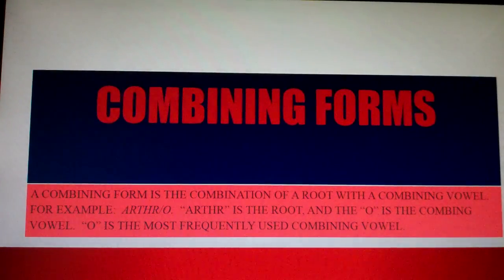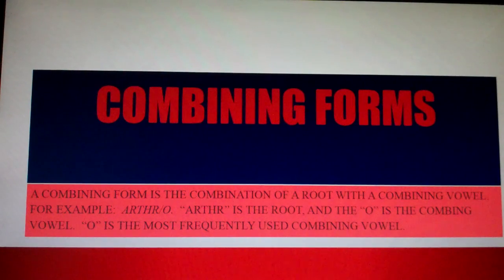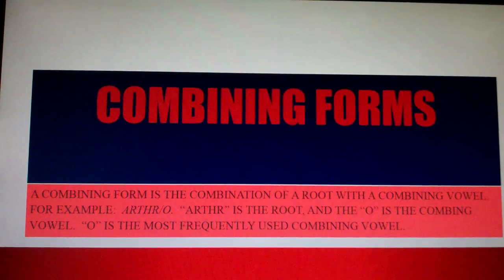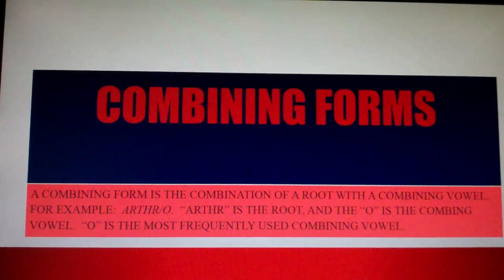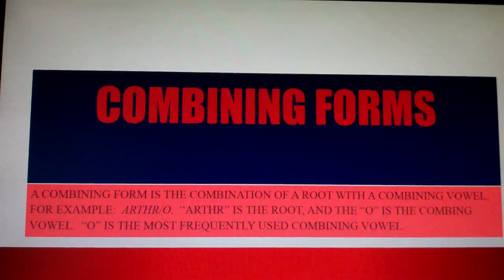Combining forms: a combining form is the combination of a root with a combining vowel. For example, Arthr is the root and O is the combining vowel, giving the combining form Arthro. O is the most frequently used combining vowel.